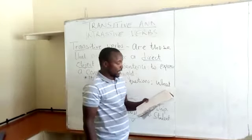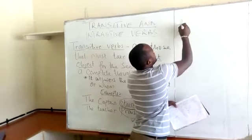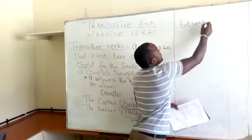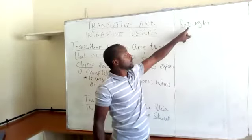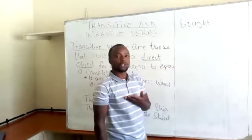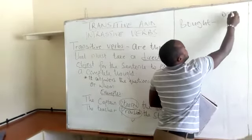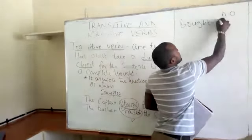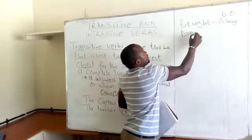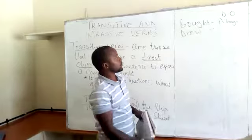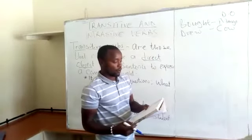Looking at some examples: if you say 'I bought,' this is a transitive verb because you will be leaving us wondering what it is that you bought. Therefore, there must be a direct object — what is it that you bought? Maybe a mango. If you say 'I drew,' we will be wondering what it is that you drew, and you must have that direct object — for example, a cow — for us to know.